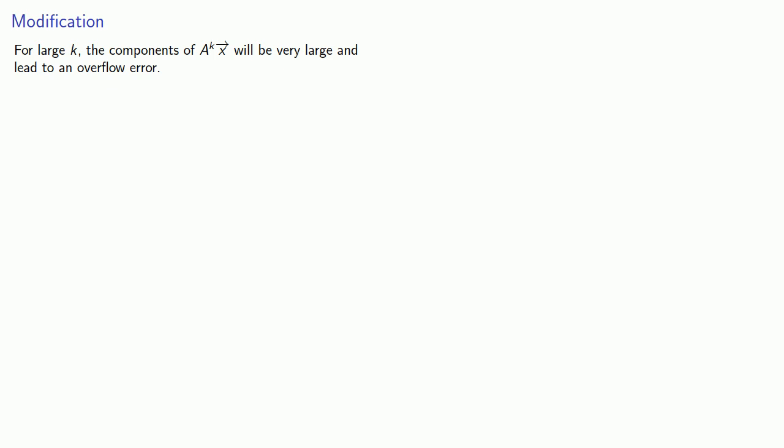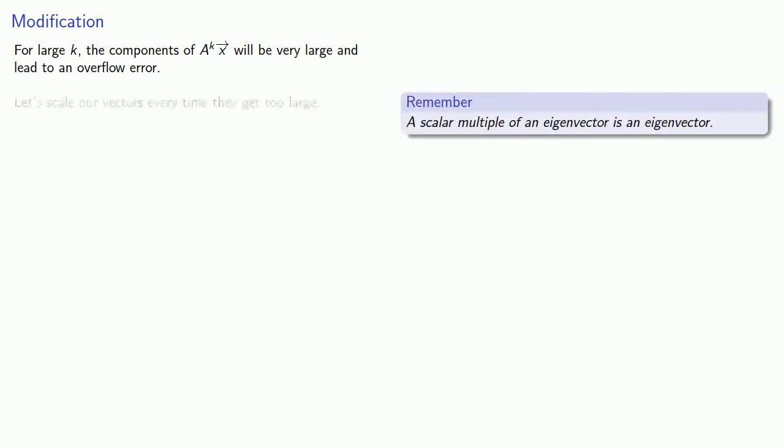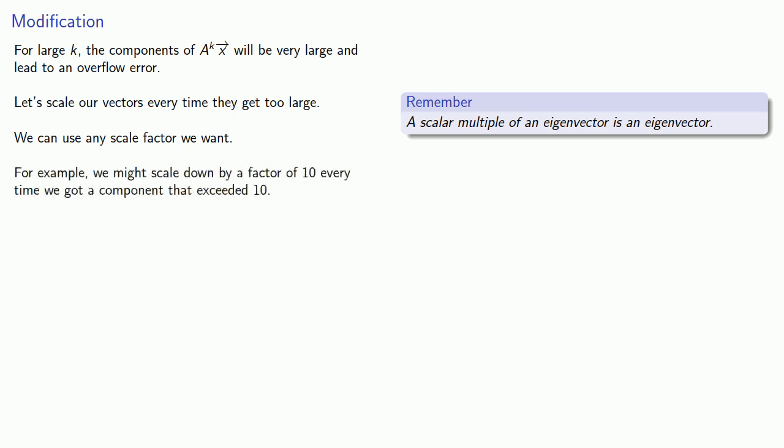And so the obvious solution here is to remember that a scalar multiple of an eigenvector is an eigenvector. And so let's scale our vectors every time they get too large. Now we can use any scale factor we want. For example, we might scale down by a factor of 10 every time we got a component that exceeded 10. But let's normalize the vectors.